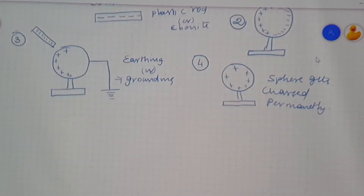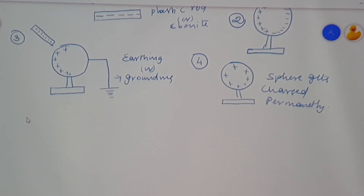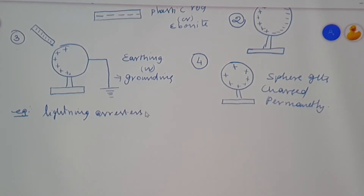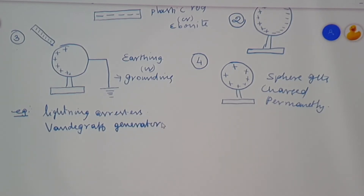Where do we use electrostatic induction? There are many examples. In our book, we are going to discuss two types of examples in later stages. One is the lightning arrestor — you might have seen lightning arrestors on top of buildings, top of towers, etc. In Tamil, it is called ididangi. Similarly, we use this in a concept called corona discharge and a device called the Van de Graaff generator, which can produce a very large potential. In the final part of the lesson, I will explain how electrostatic induction is used.